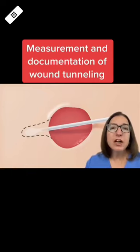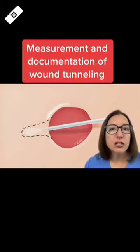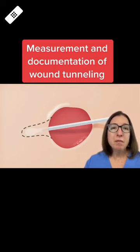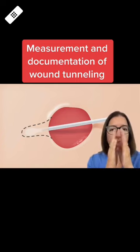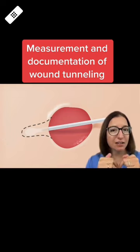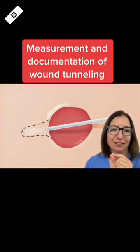When you need to measure and document tunneling in your patient's wound, you should first determine the direction of the tunneling using the clock method. With this method, you assume that the patient's head is at 12 o'clock and their feet are at 6 o'clock, so this tunnel is at 9 o'clock.